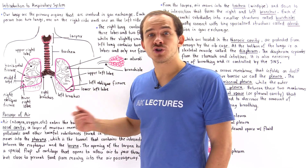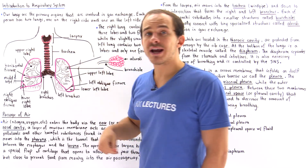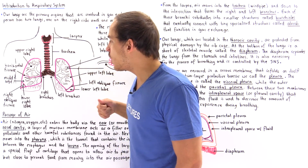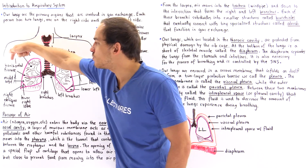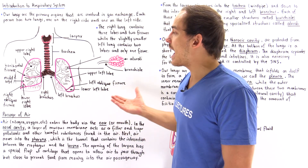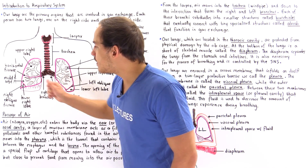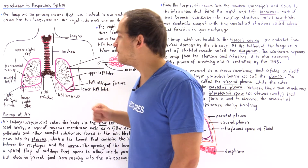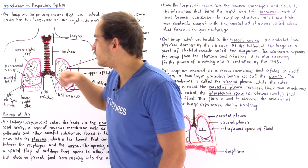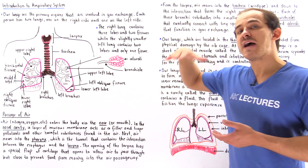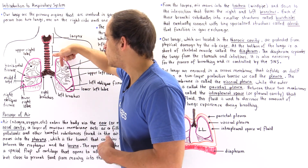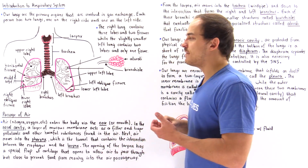The right lung, which is slightly larger, consists of three different lobes. We have an upper or superior lobe, and then we have a middle lobe. The line separating these two lobes is relatively straight, and that's exactly why we call it the horizontal fissure. We also have a lower lobe, also known as our inferior lobe, and this is separated by a line called the right oblique fissure, because it's also slanted. So we have the upper, the middle, and the lower lobe. Superior means found above, and inferior means found below.